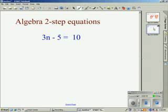Looking at another one where we involve subtraction and multiplication. We have 3n minus 5 equals 10. We're going to do subtraction first. What is the inverse operation of subtraction? Addition. So we're going to add 5 to both sides, and these cancel each other out, and we get 3n equals 15.